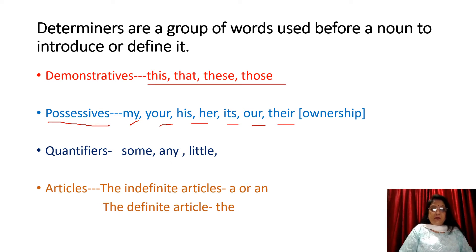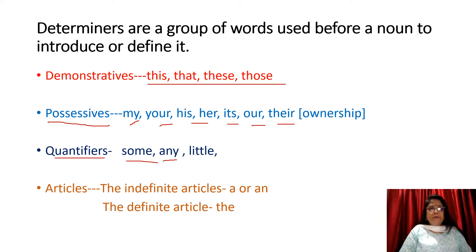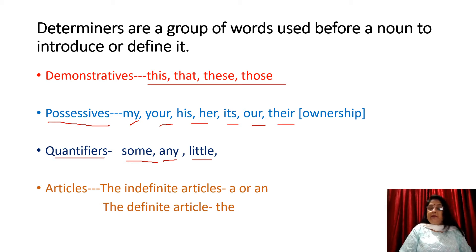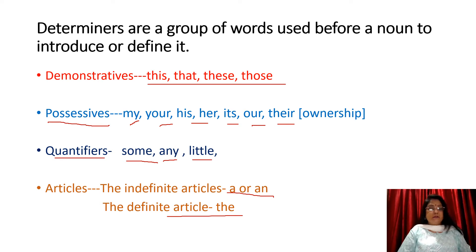Quantifiers tell about quantity — whether it is more, less, few, little, like this. And articles — we all know there are definite articles: the; and indefinite articles: a or an. We'll study more about these in the next slide.